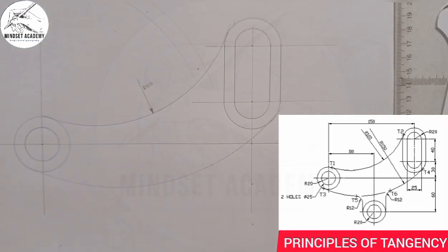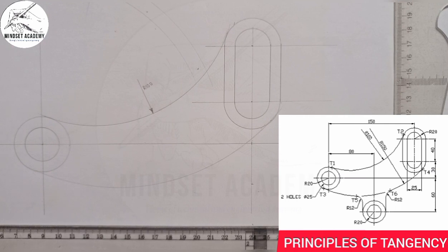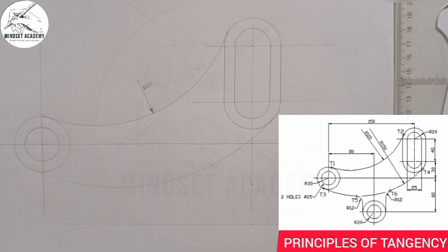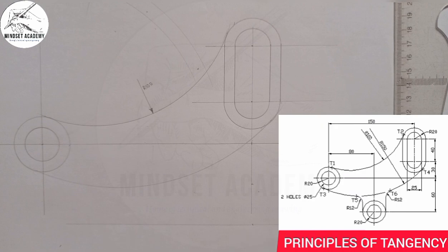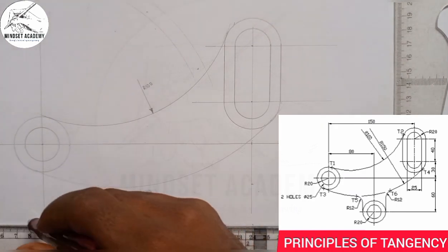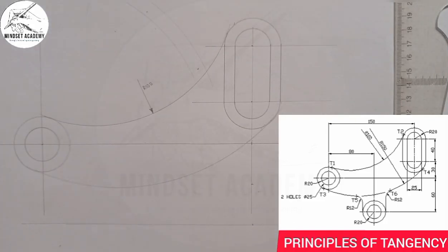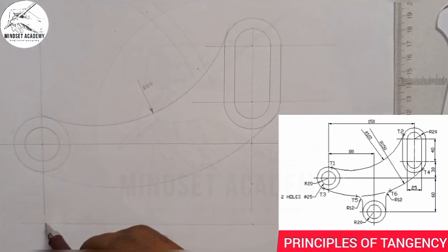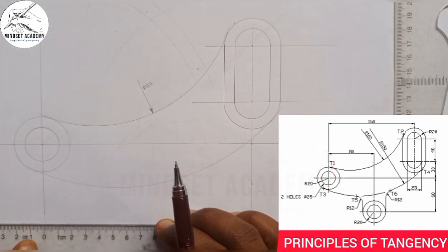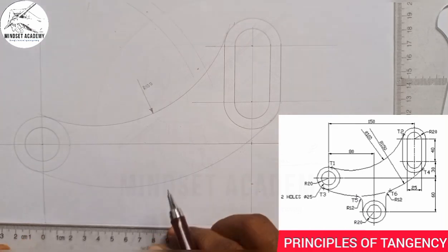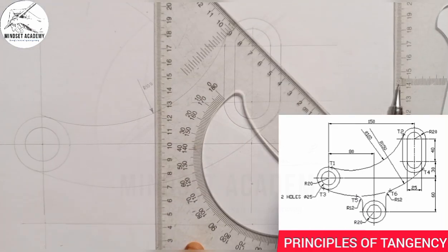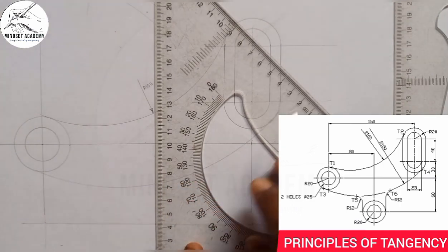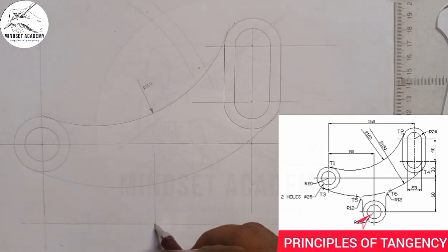I'll use my ruler and draw a horizontal line. To get the center of that circle, I'll measure a distance of 80 from this line. I'll join these two points and from this point here measure 80 — from 0 to 80 — then take it upward with a faint line. That is the point we're actually focusing on.